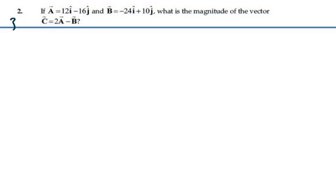Here's problem three two. If A is equal to 12i minus 16j and B is equal to minus 24i plus 10j, what is the magnitude of the vector 2A minus B? So our A is 12i minus 16j.